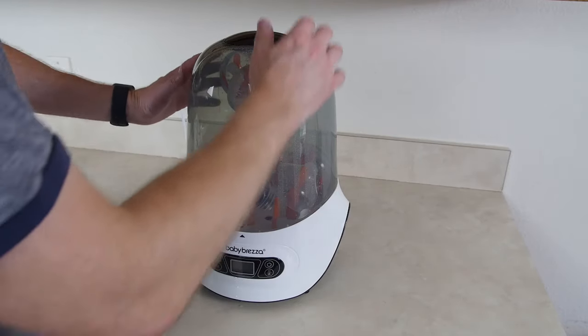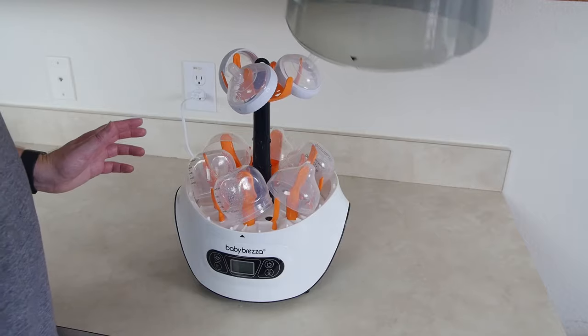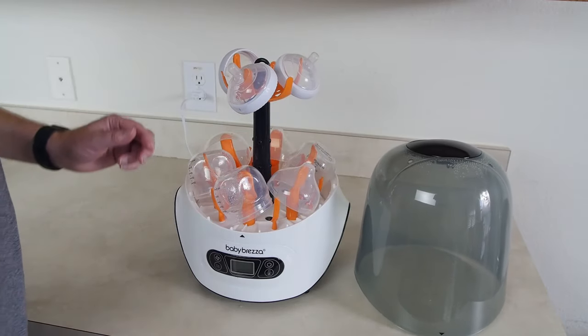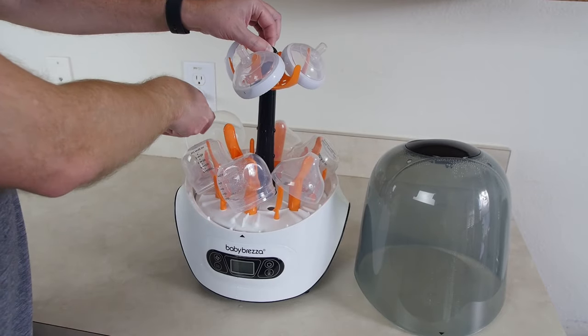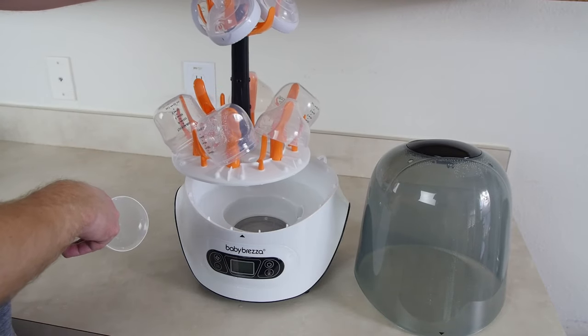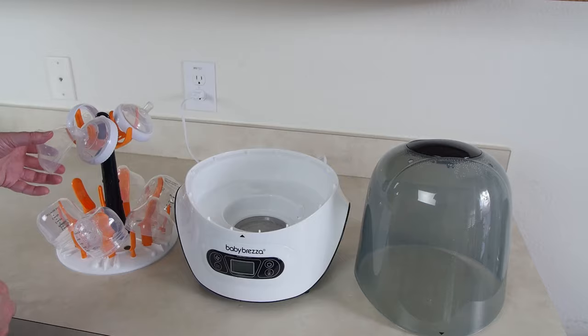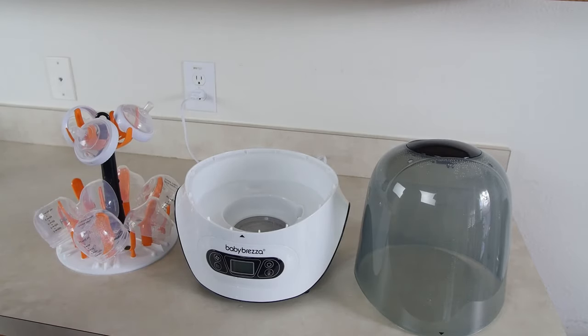Now once your baby Brezza sterilizer dryer has done the job you can take the lid off. You can take the accessory rack out. Be careful because some of the stuff will try to fall off on you. And this rack can now be a holder for your baby bottles and accessories.